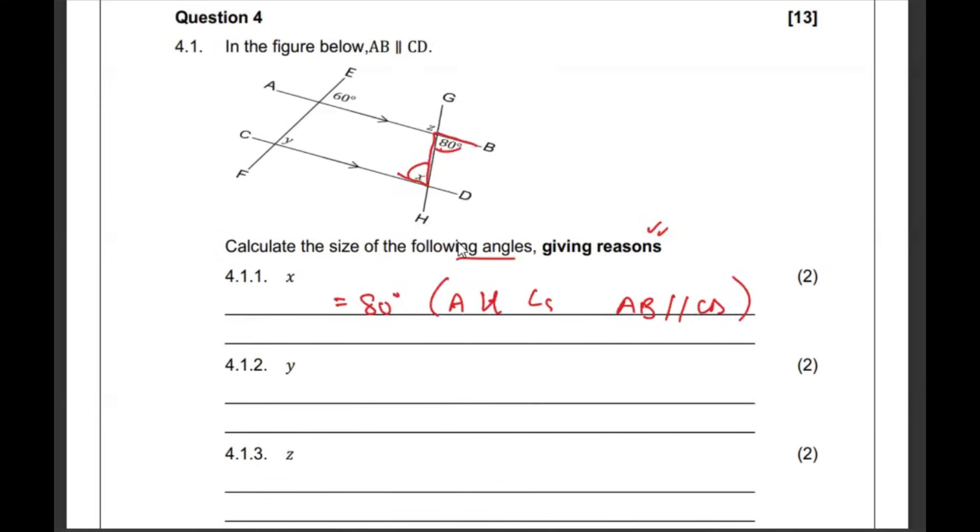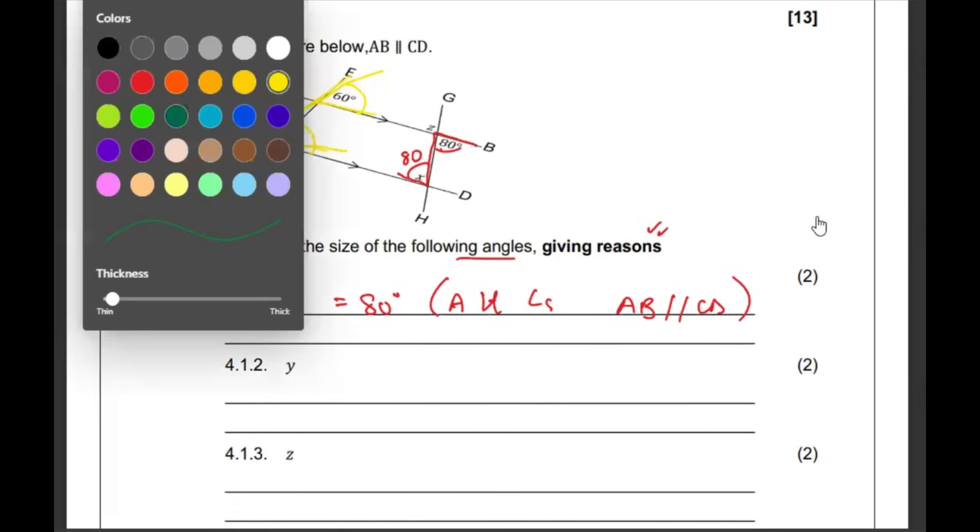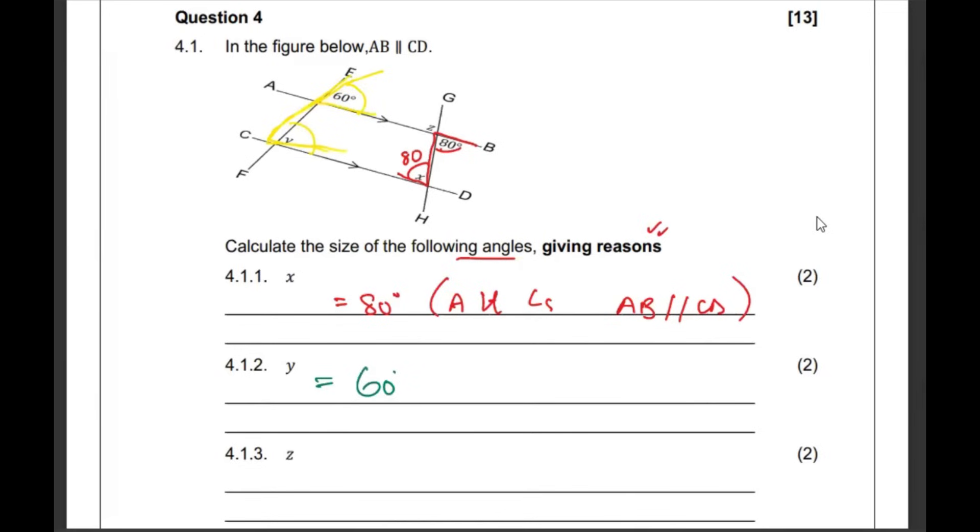And then if this is 80, they want us to find the size of y. So, we know that y and the 60, they are forming what we call the F. We can see this F here. It means that this y and the 60 are the same. So, what we're going to say is that y is going to be 60. Those are corresponding angles because AB is parallel to CD.